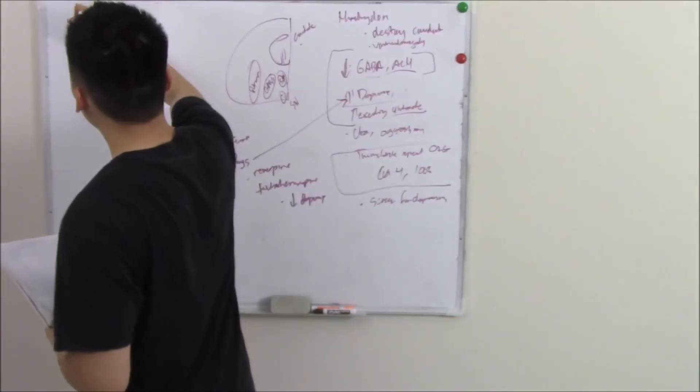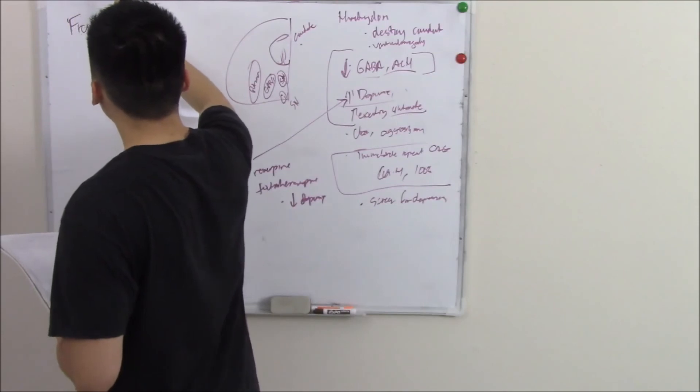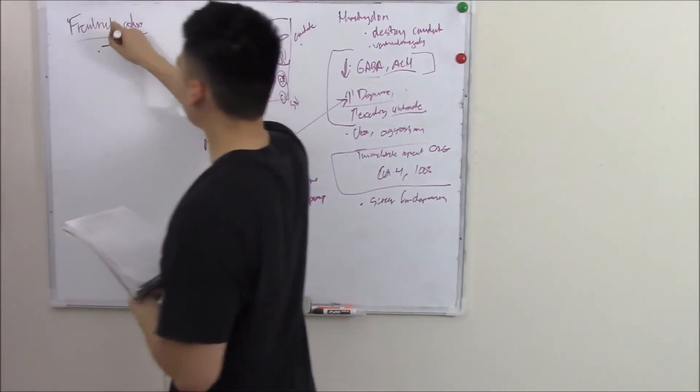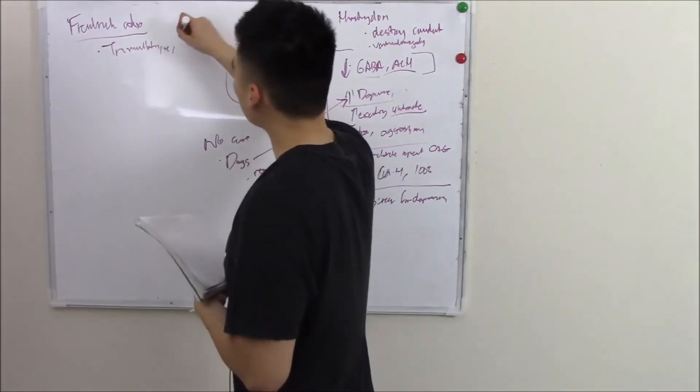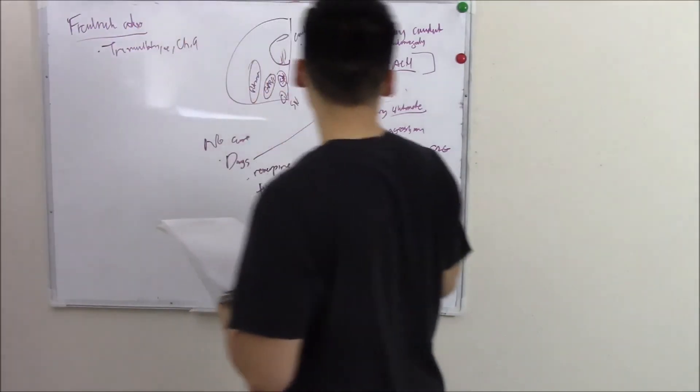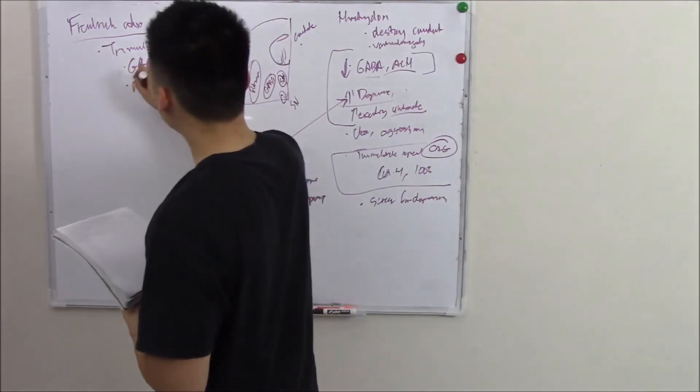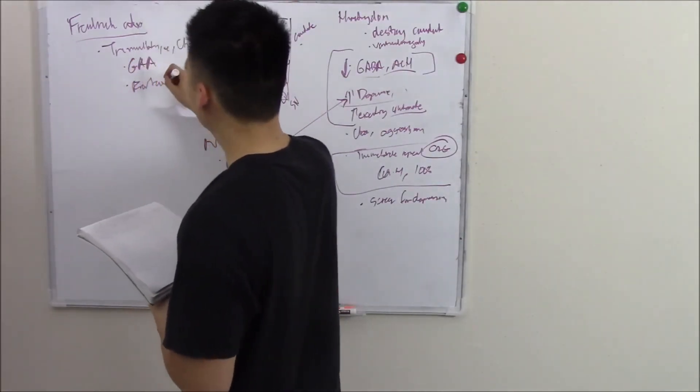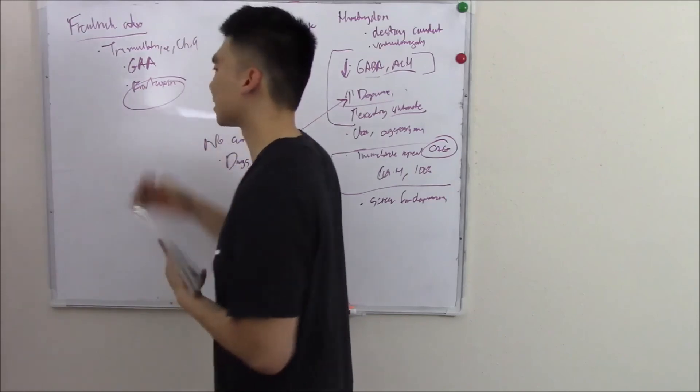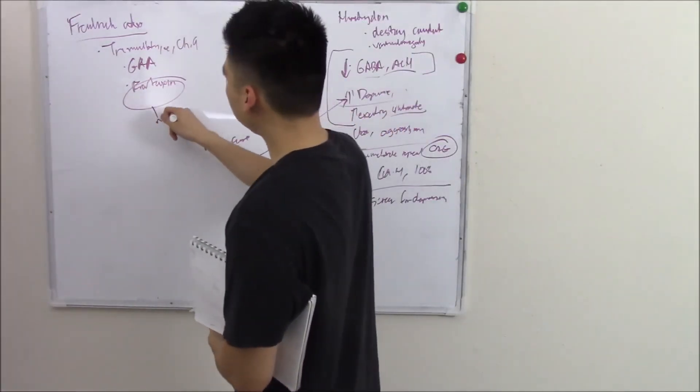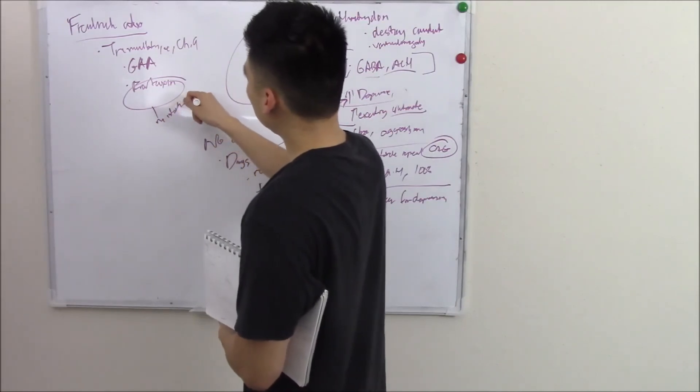The last movement disorder I want to talk about today is Friedreich Ataxia. This is another trinucleotide repeat. This time it's on chromosome 9, and instead of being CAG, it's GAA. It codes for something called frataxin. You absolutely need to know it codes for frataxin. Frataxin helps your mitochondria regulate iron. Iron is a great thing, but iron is also a free radical. If you can't regulate it, you have too much iron, you have free radicals. You basically destroy your mitochondria.